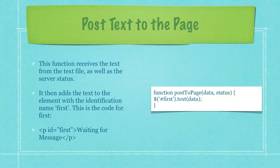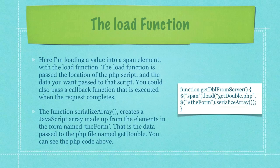Continuing on with the code, this function receives the text from the text file as well as the server status. It then adds the text to the element with the identification name 'first', and you can see the code for that paragraph in the third bulleted item. Here I'm loading a value into a span element with the load function. The load function is passed the location of the PHP script and the data you want passed to that script. You could also pass a callback function that is executed when the request completes. The function serializeArray creates a JavaScript array made up from the elements in the form named 'the form', and that is the data passed to the PHP file named get double.